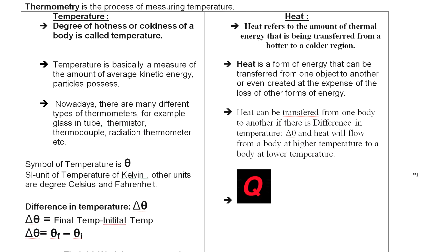An important point: in GCSE O-levels, the symbol for temperature is not T — it is theta (θ), a Greek symbol also used for angle. The unit for temperature is Kelvin, but other units such as degree Celsius and Fahrenheit are also used. Kelvin can be converted into degree Celsius and further into Fahrenheit, and vice versa.